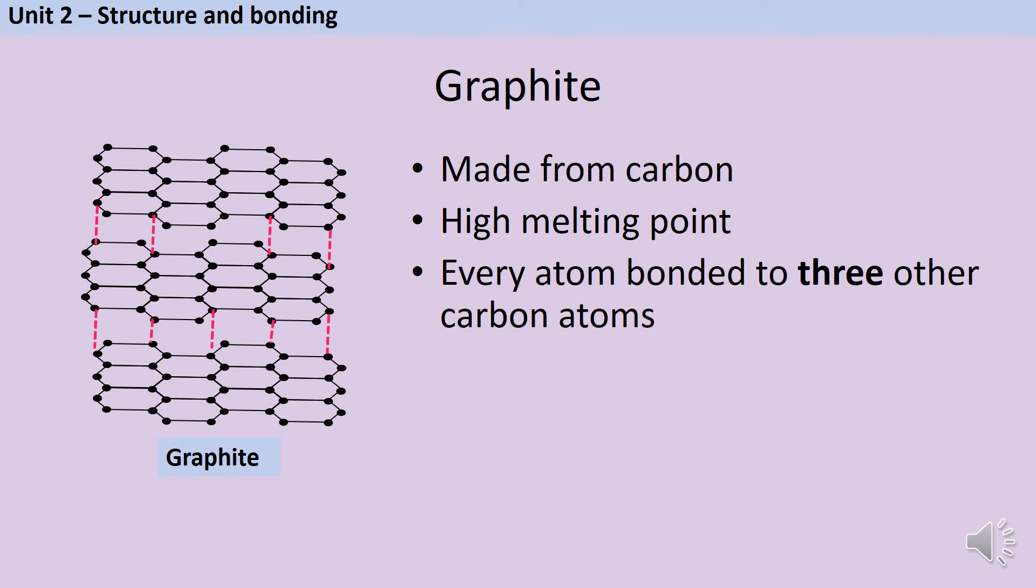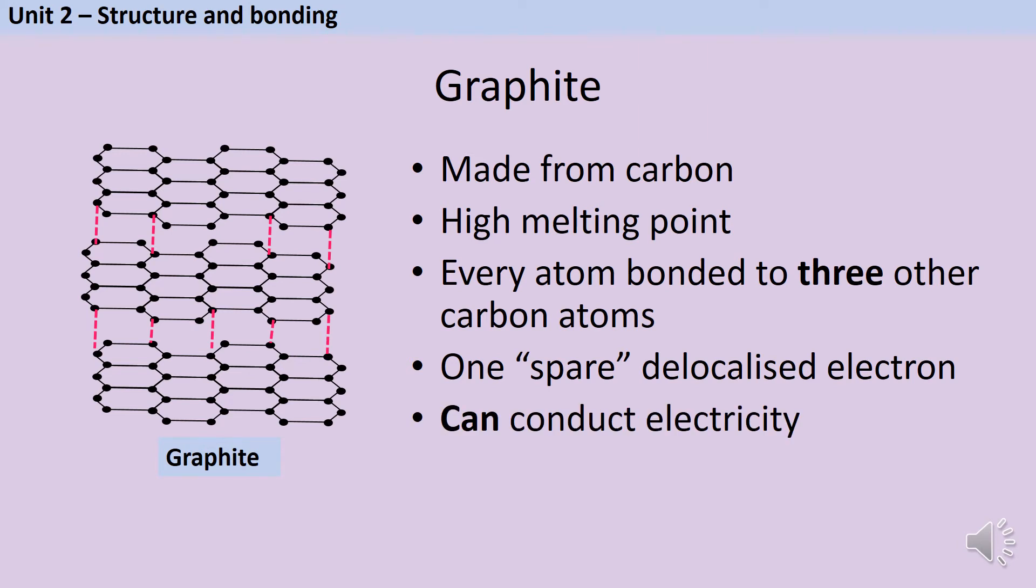Also, because each atom is only making three strong covalent bonds instead of four, that leaves one electron spare. These delocalised electrons are able to move through the entire substance, they're not tied to one particular atom, and this means that graphite is incredibly rare as a non-metal, in that it can conduct electricity.